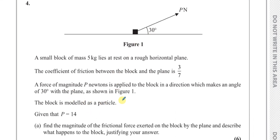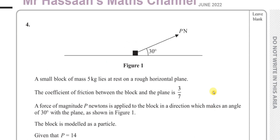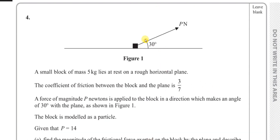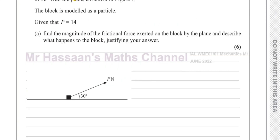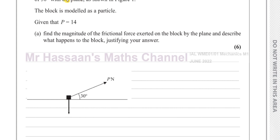The block is modeled as a particle. Find the magnitude of the frictional force exerted on the block by the plane and describe what happens to the block, justifying your answer. So we have this block lying on the plane. I've got a copy of the diagram here. Let's put the forces acting on this block on the diagram. We have its weight acting vertically downwards, which is 5g newtons, the reaction force R perpendicular to the surface, a force P applied at an angle trying to move the block, and a frictional force opposing that motion.